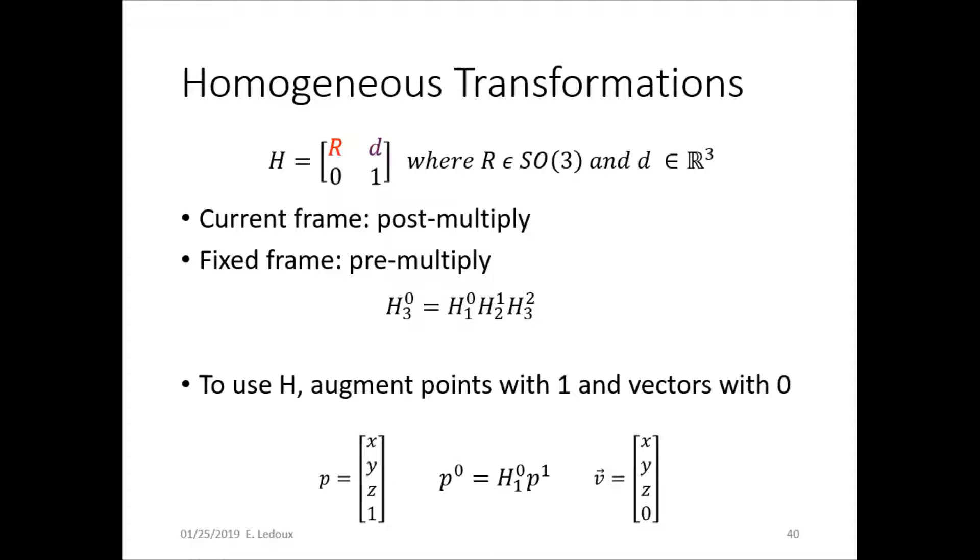Similarly to rotations, with a transformation, current frames post-multiply and fixed frames pre-multiply. The more common is current frame. So you can see here that h of 1 in frame 0, then h2 with respect to 1, then h3 with respect to 2, they all kind of compound. And so you end up with h3 with respect to 0.